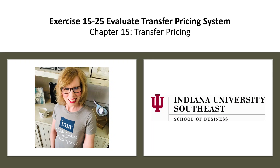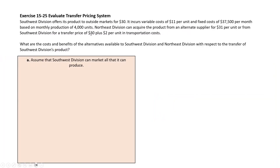In this video, I'm going to demonstrate evaluating a transfer pricing system using exercise 1525 as an example. We have a scenario where a company has two divisions. Currently, one of the divisions, Southwest, offers its product to outside markets for a sales price of $30 per unit.